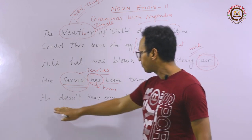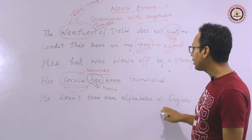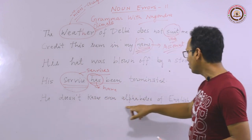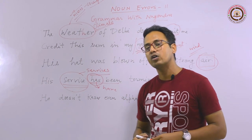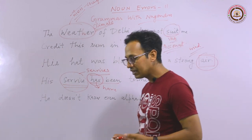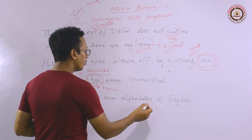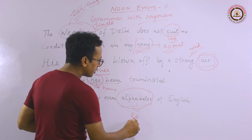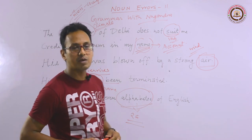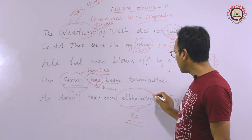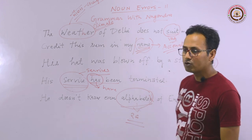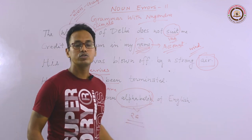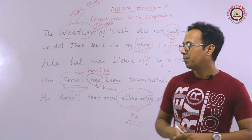The last sentence is also very important because people tend to think of it in plural form. The sentence is: 'He doesn't know even alphabets of English.' This seems completely correct to us and we mark no error, but that is not the case. The noun 'alphabets' has a mistake — despite there being 26 letters, the entire set is referred to as the 'alphabet,' not 'alphabets.' So 'alphabets' should be corrected to 'alphabet.'